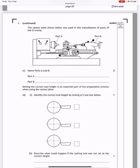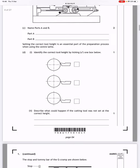Identify the correct tool height by ticking the box below. It's the one that's aligned up to the middle. Describe what could happen if the cutting tool was not set at the correct height. Well one thing would be it wouldn't turn the metal as efficiently. Another answer would be if you were facing off you would end up with a little raised part in the middle of the rod because it's not being lined up to the centre.